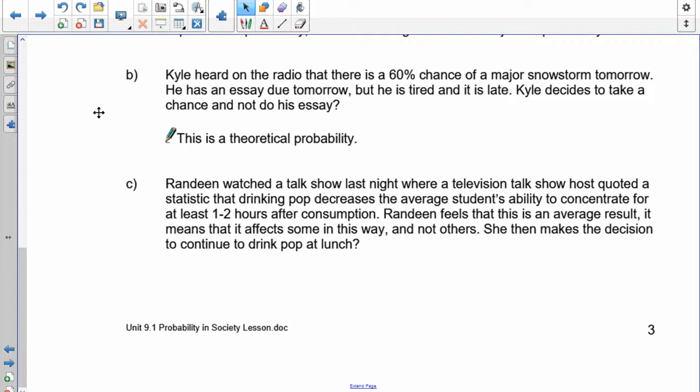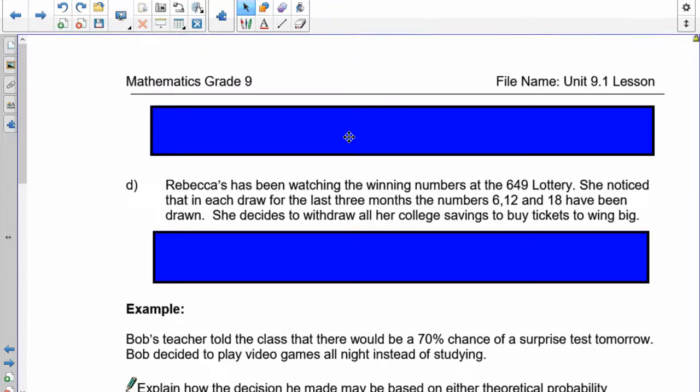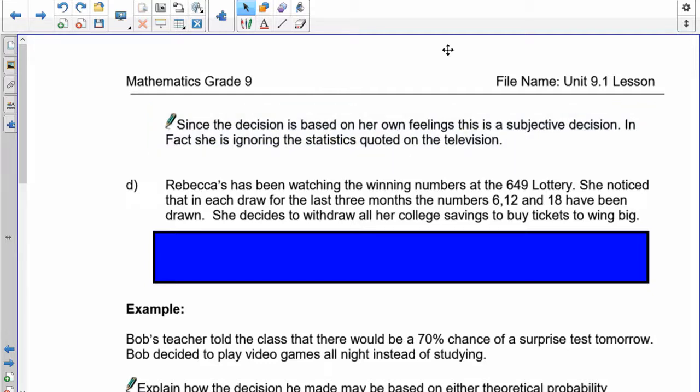Third one. Randine watched a talk show last night where a television talk show host quoted the statistic that drinking pop decreases the average student's ability to concentrate for at least one to two hours after consumption. Randine feels that this is an average result. It means that it affects some people in this way and not others. She then makes the decision to continue drinking pop at lunch. So, the question is, is this experimental, theoretical, or subjective? Well, since Randine is going on her own instincts, she has the facts in front of her, but she's ignoring them, and she doesn't believe the person who's giving the facts on the television, those statistics and facts don't apply to her. So that means that she is going with her own instinct, own gut decision. So this one is going to be a subjective decision.